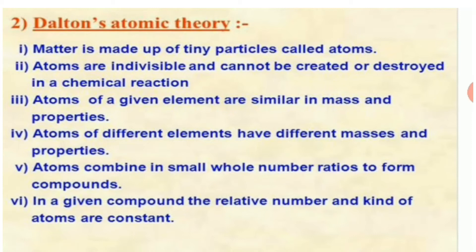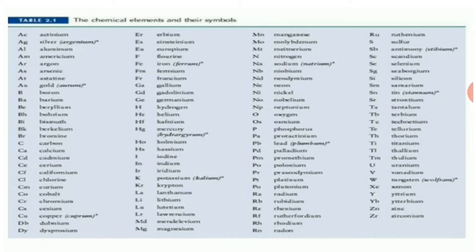Here are some symbols for elements. For example: actinium is Ac, silver is Ag, aluminium is Al, americium is Am, argon is Ar, arsenic is As, and so on. You have to learn this table of element symbols.